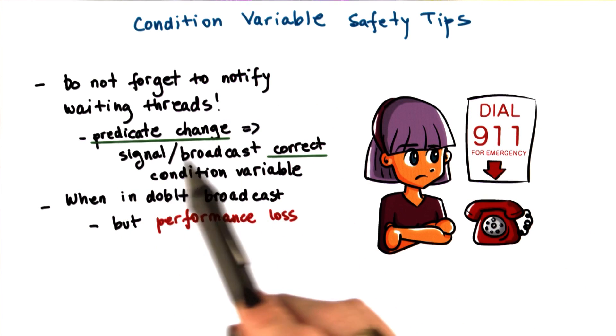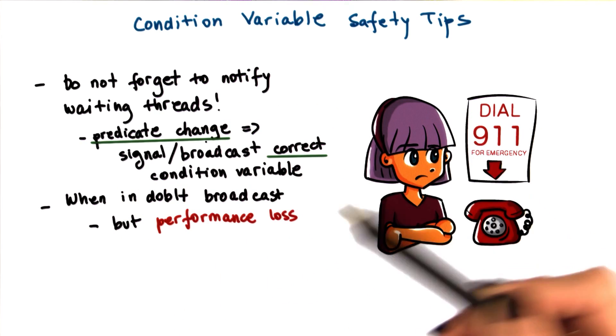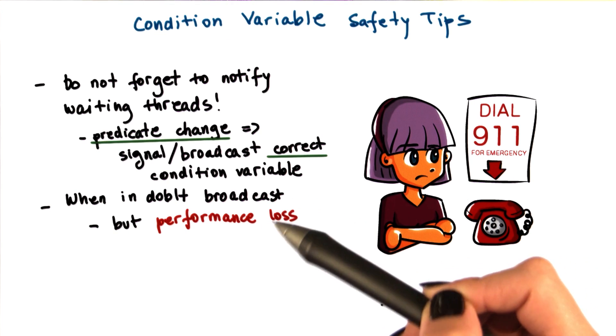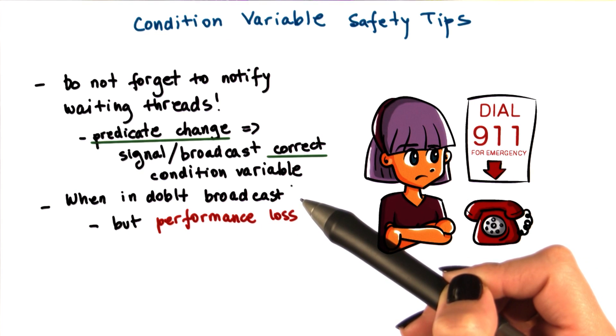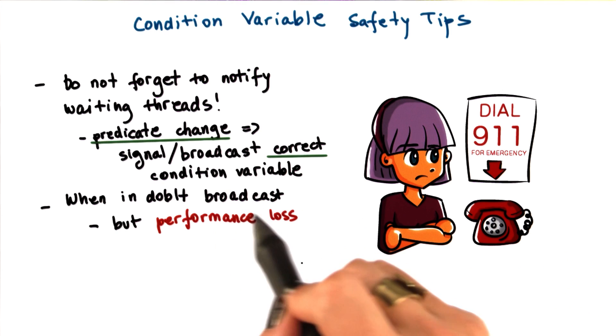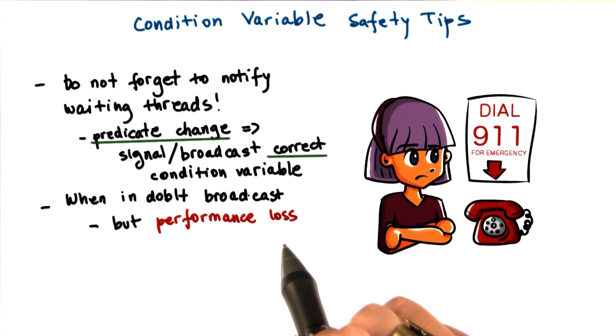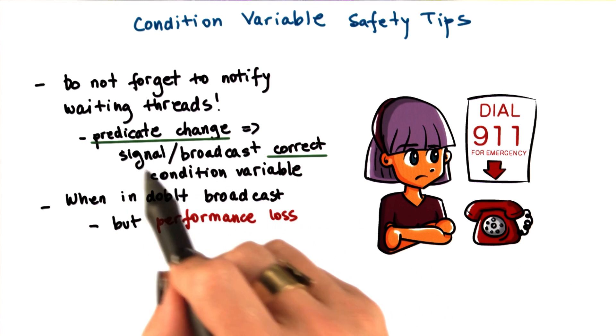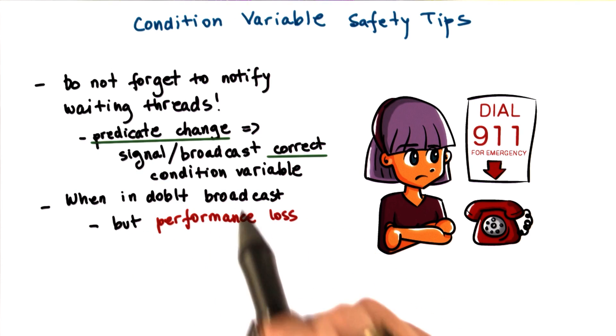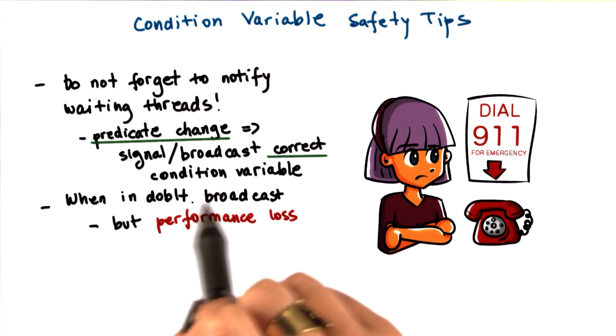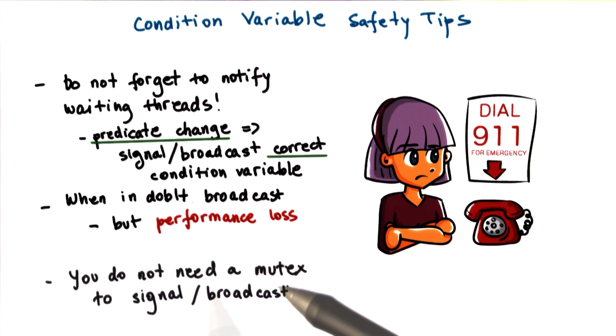Next, if you're ever in doubt whether you should use signal or broadcast, use broadcast until you figure out what the desired behavior is. Note that with broadcast, you will lose performance. So make sure you use the correct notification mechanism, signal or broadcast, when you need to wake up threads from a condition variable.